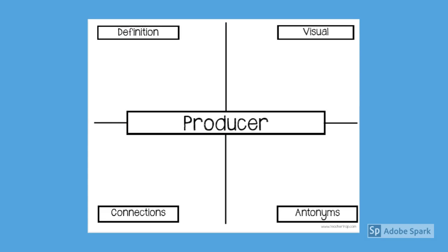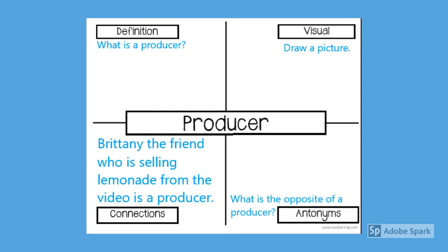On the next slide, I have a little hint as to what each of these things mean. For example, Brittany, the friend who is selling lemonade from the video, is a producer. So an antonym is what is the opposite of a producer. Your visual is just draw a picture of a producer, and the definition is what do you think that it is.